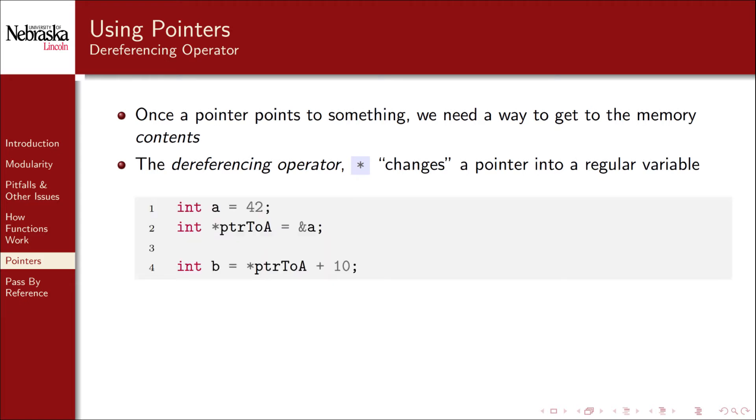Here's an example. Dereferencing the pointer on line four turns it into a regular variable giving us access to its contents, in this case 42, so that we can add 10 to it and assign 52 to b.